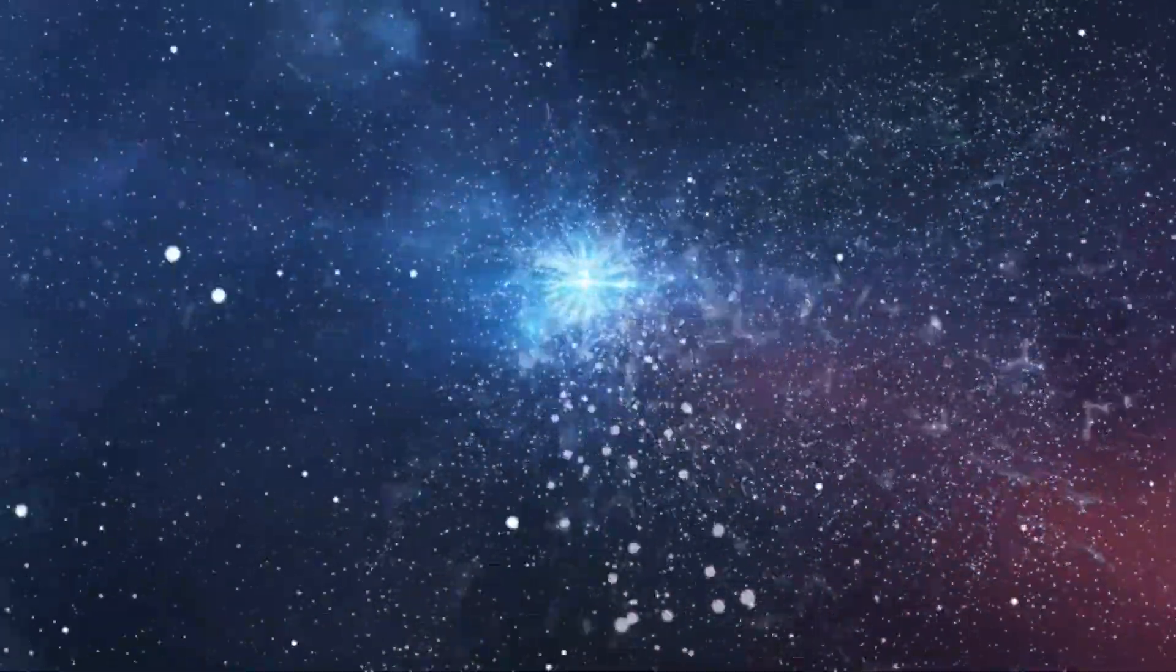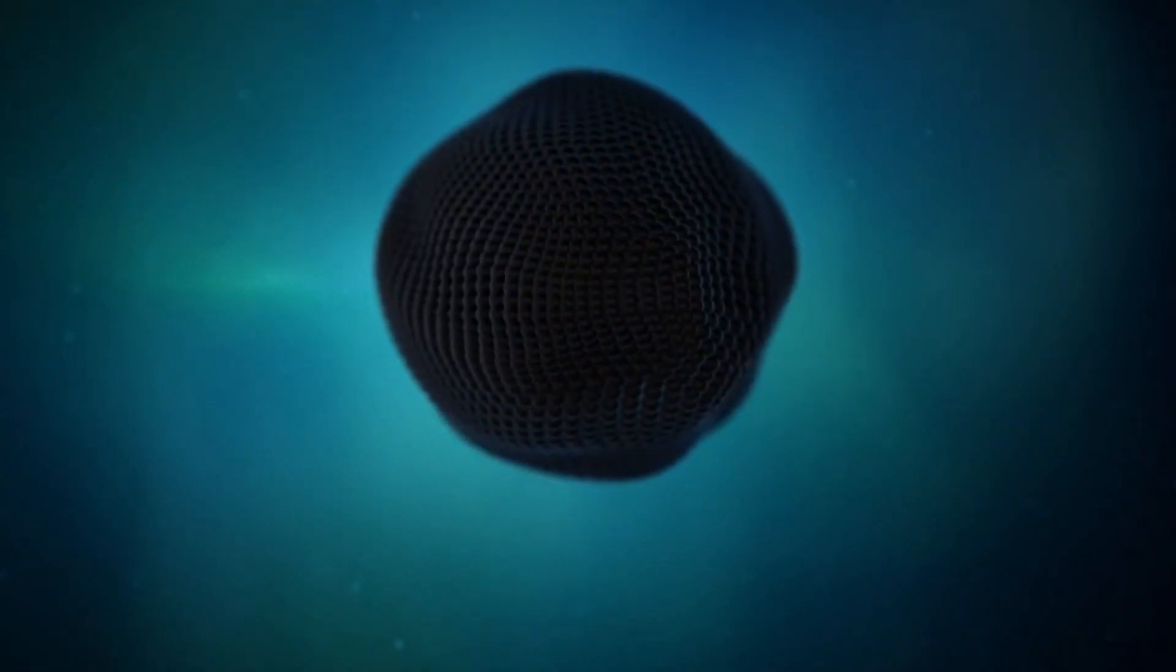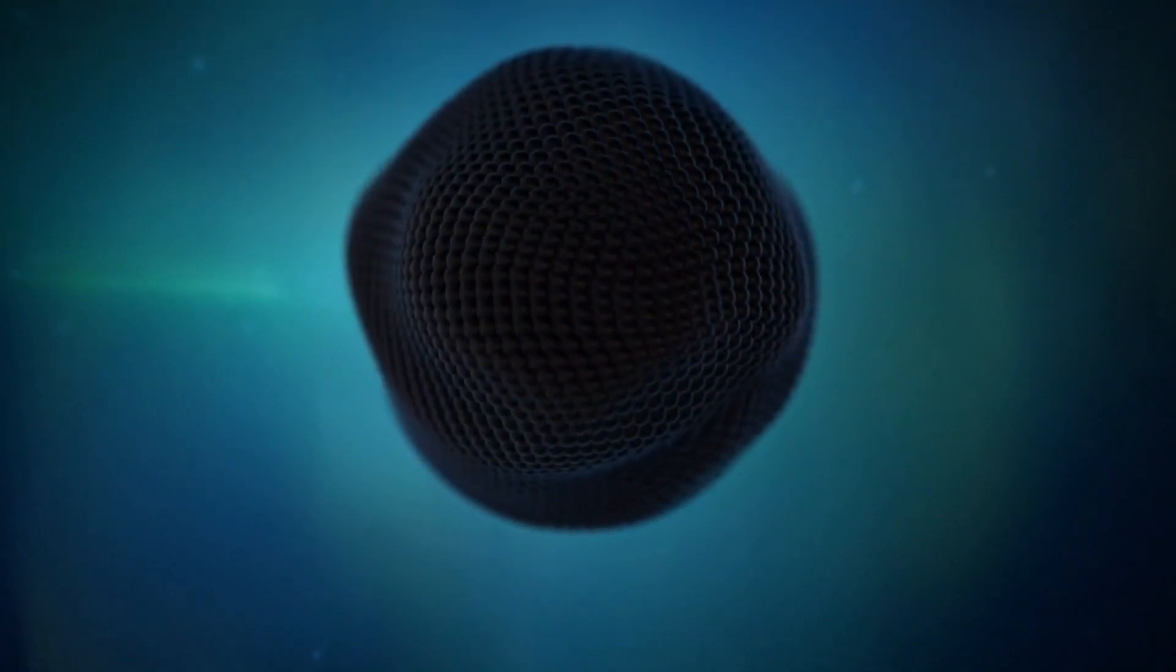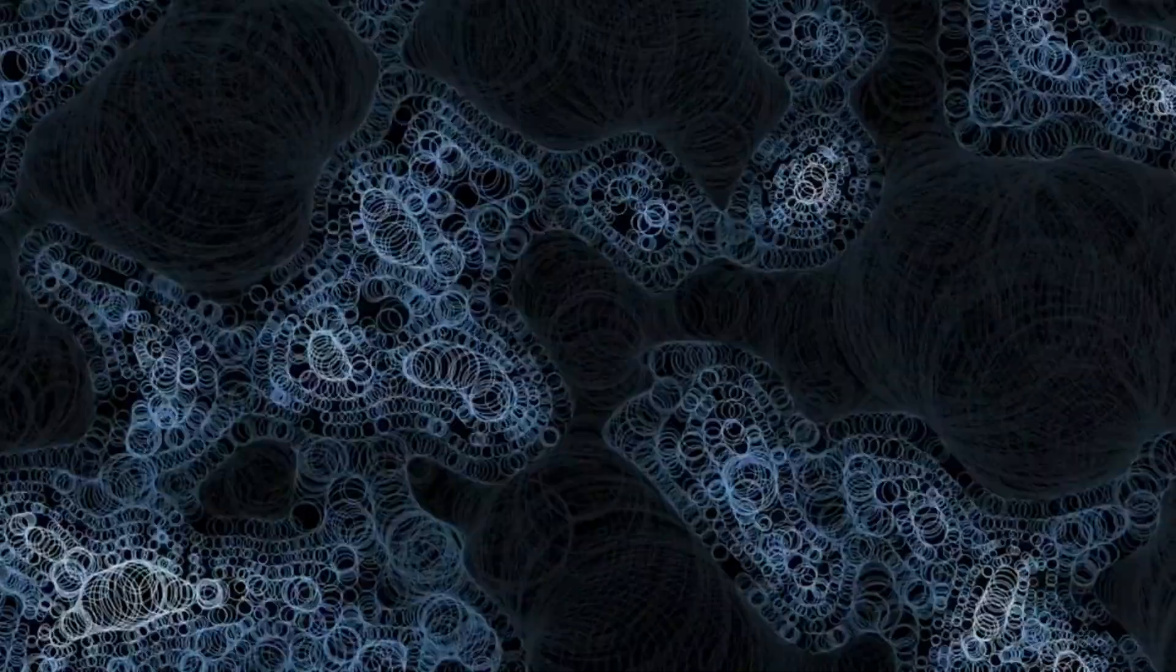Dark matter is a type of matter that does not interact with light or electromagnetic radiation, but only with gravity. It makes up about 27% of the total mass energy of the universe, and it helps to hold galaxies and clusters together.